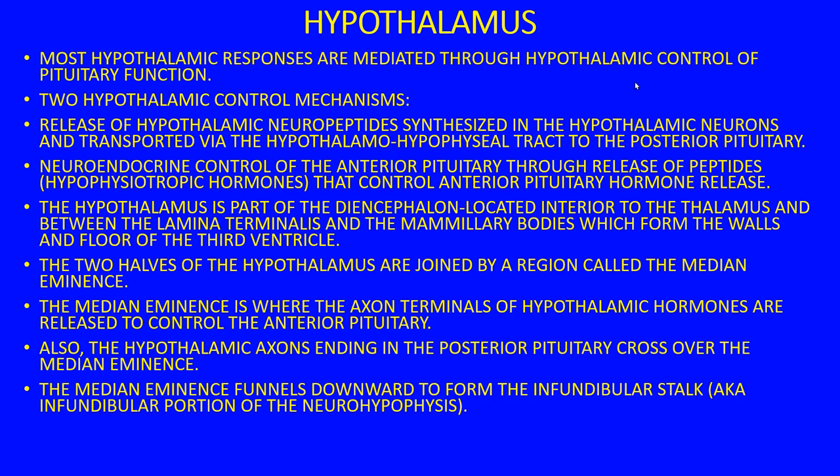Neuroendocrine control of the anterior pituitary is different — it occurs through the release of hypophysiotropic hormones. These are what we call releasing hormones, all ending in 'RH.' The hypothalamus is part of the diencephalon, located inferior to the thalamus, between the lamina terminalis and the mammillary bodies, forming the walls and floor of the third ventricle. The two halves are joined by the median eminence, where axon terminals of hypothalamic hormones are released to control the anterior pituitary.